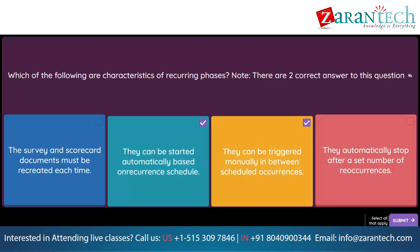Question. Which status does the supplier have when your customer starts the disqualification process? Option 1: In disqualification. Option 2: Pending disqualification. Option 3: In qualification. Option 4: Not qualified.